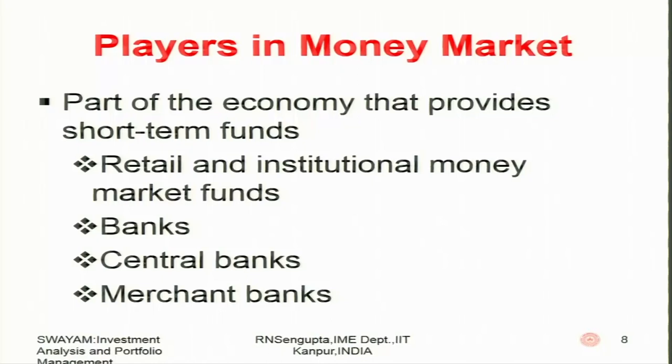The players in the money market include retail and institutional money market funds, banks — such as RBI, SBI, Axis Bank, ICICI Bank — different types of central banks, merchant banks, and cooperative banks, all wanting to operate such that everyone is able to distribute money in a much broader sense throughout society and the economy, so that overall commerce, trade, and investment progresses in a positive way.